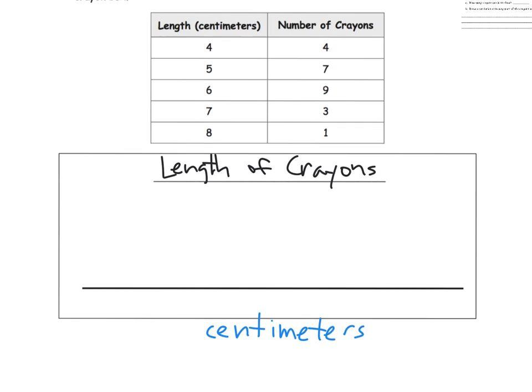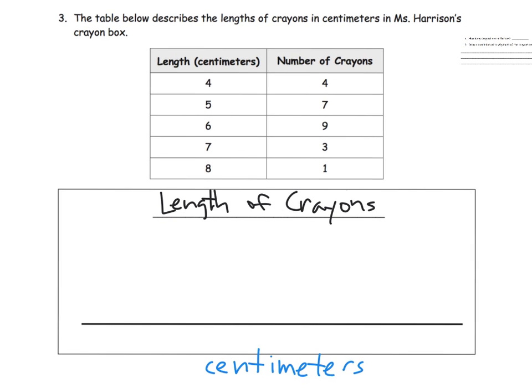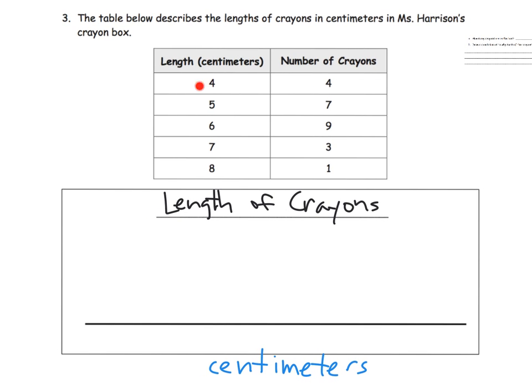Now we know that our lengths go from four centimeters to eight centimeters, so I'm going to start with a zero dash, dash, and then here's my four, here's my eight. Let's see: four, five, six, seven. So five, six, seven, eight.